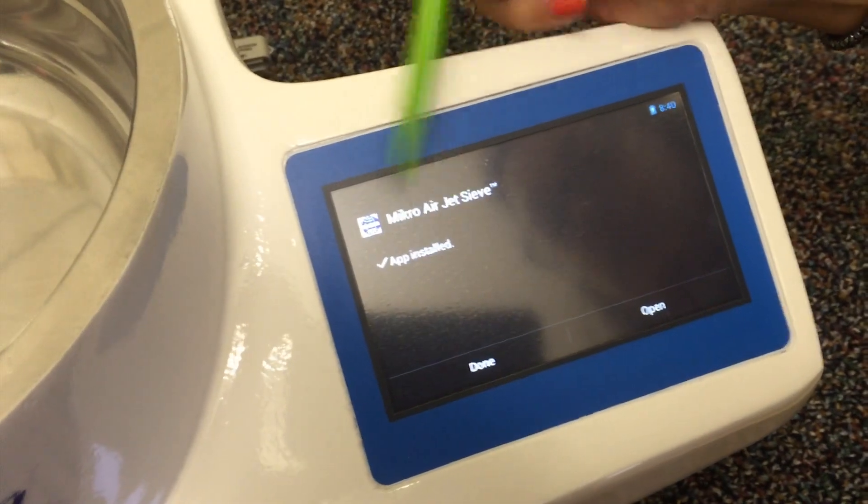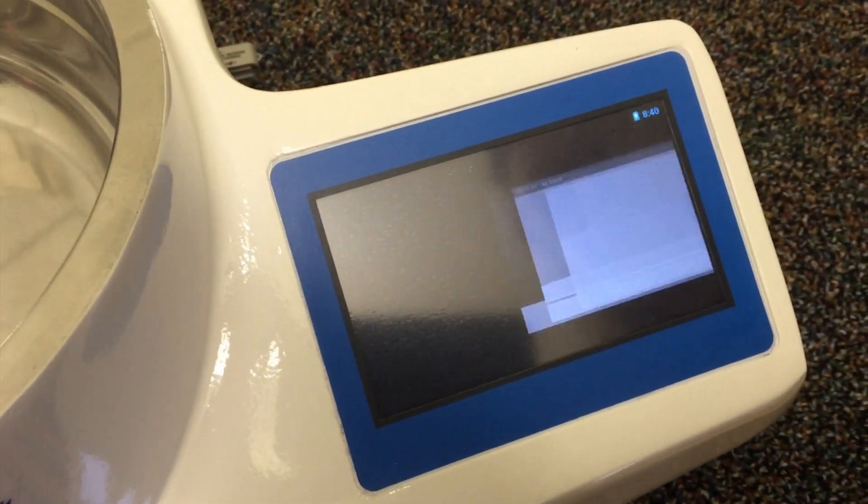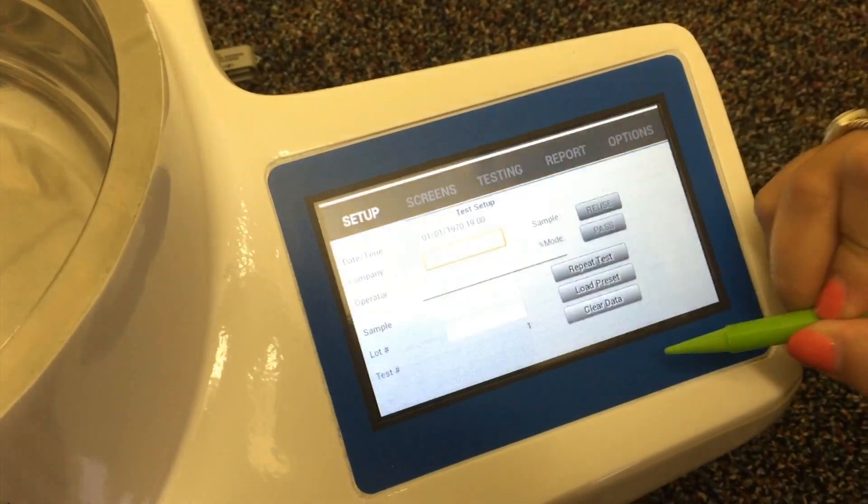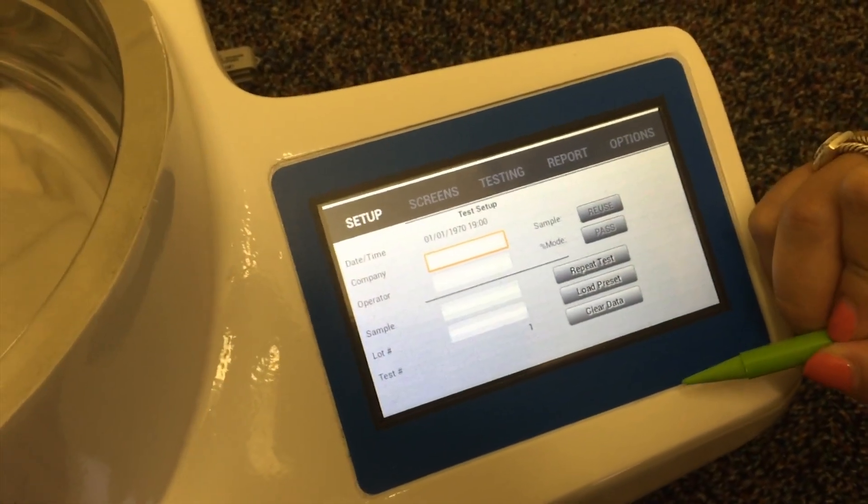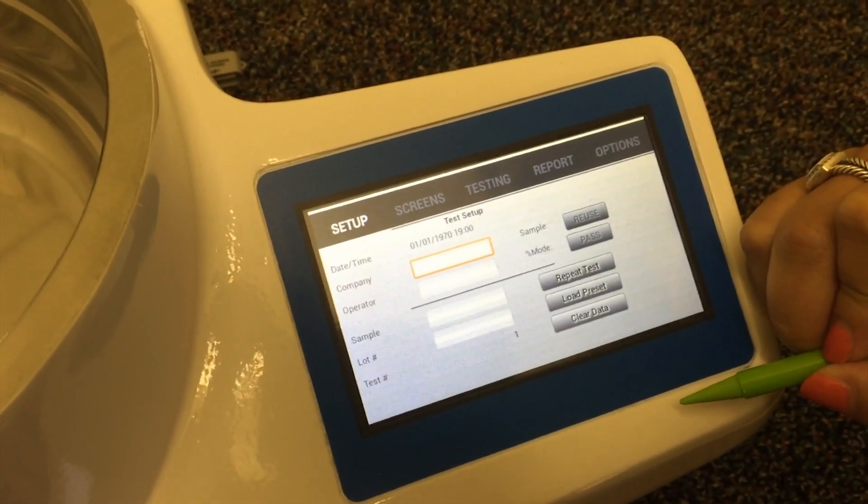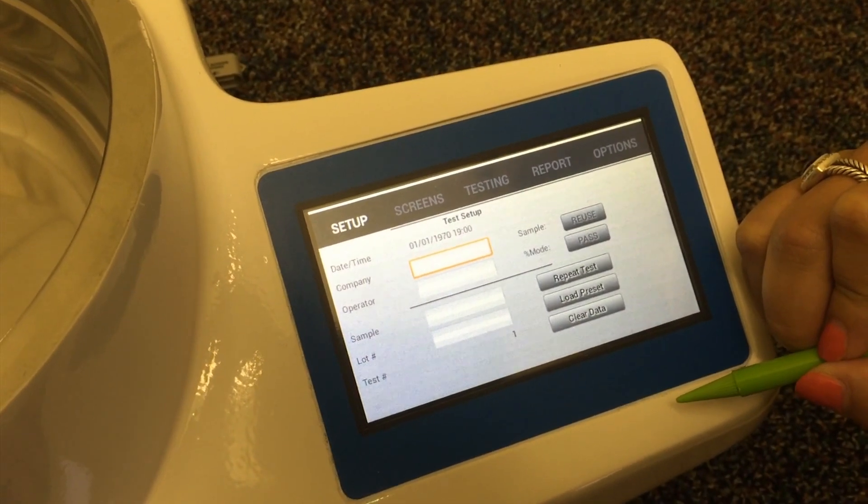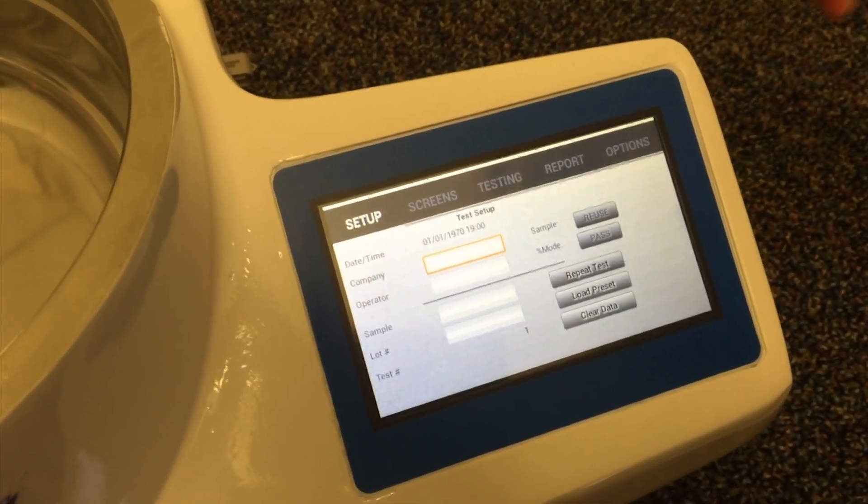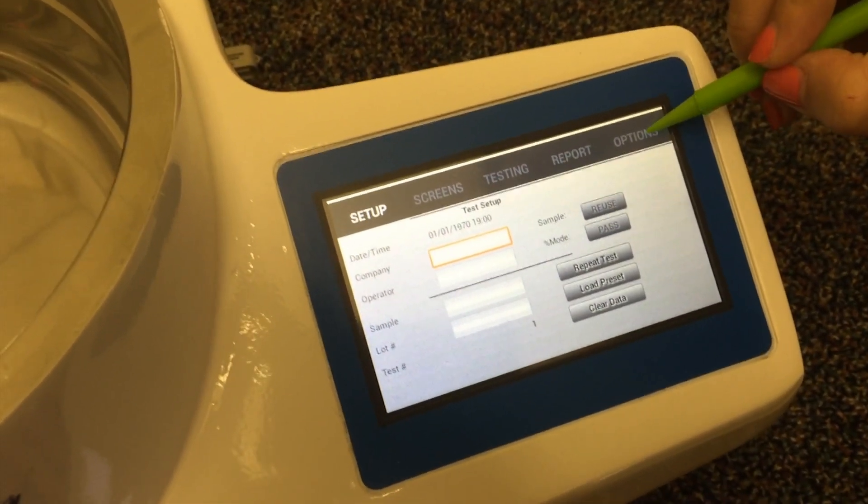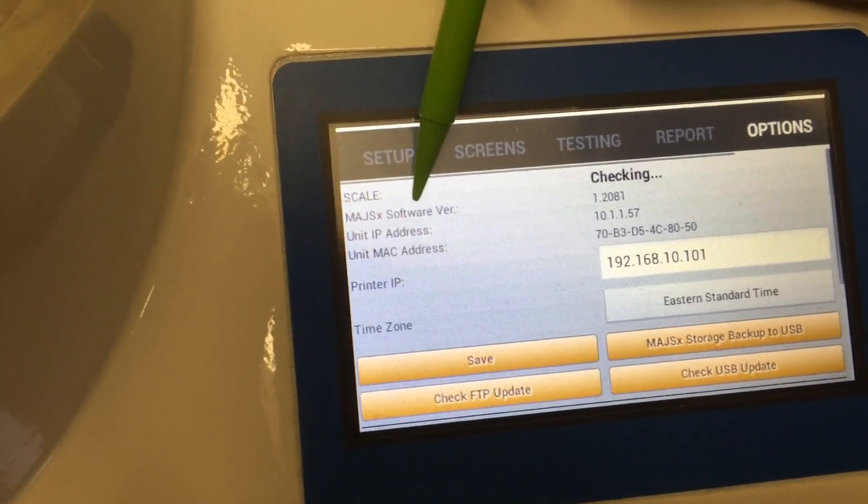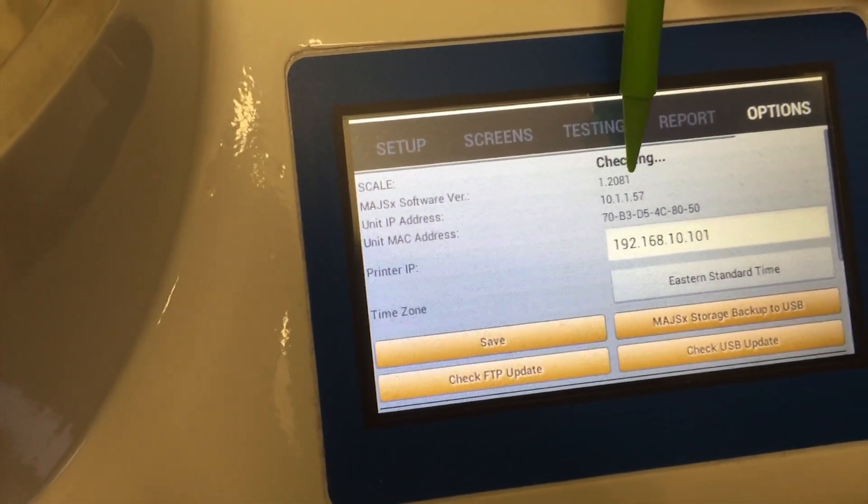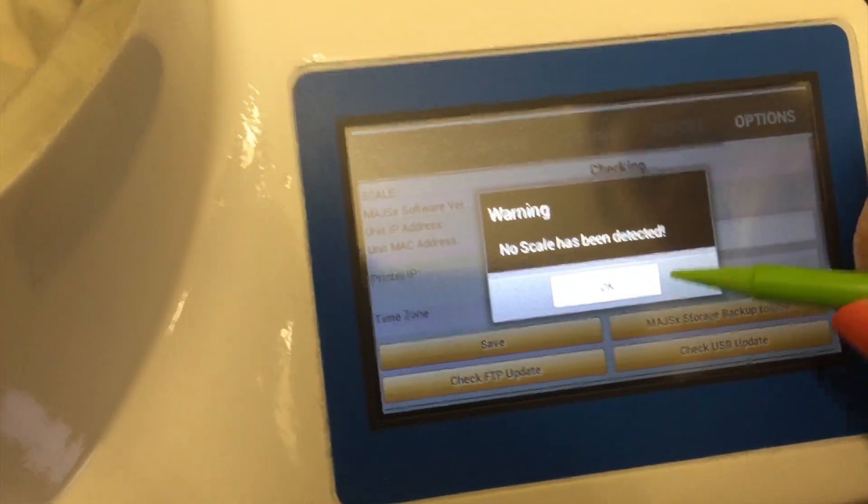Once the application is installed we can open it. And you can see here the MAJSX software version is 1.2081. It's now been updated.